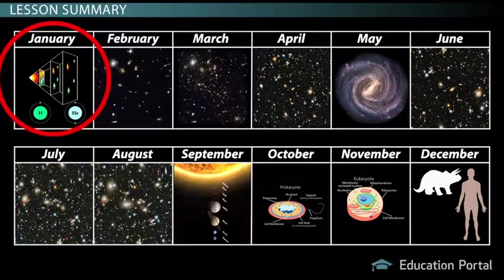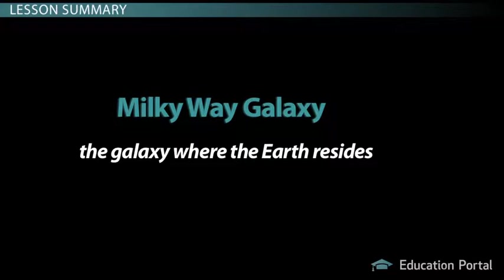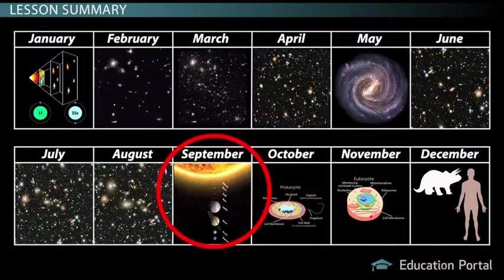On January 1st, the Big Bang occurs. In May, the thin disk of the Milky Way galaxy, the galaxy where the Earth resides, has formed.